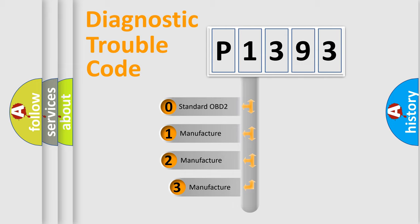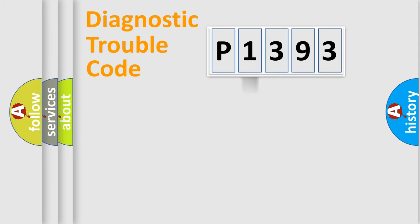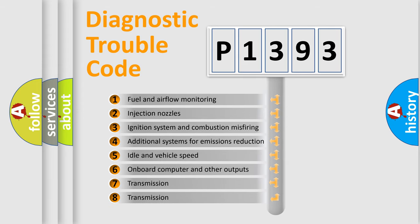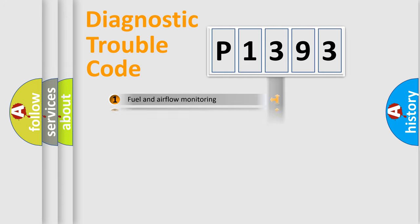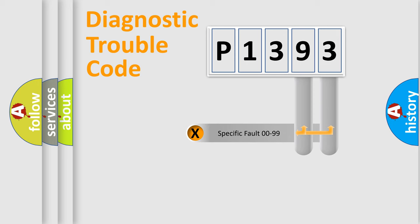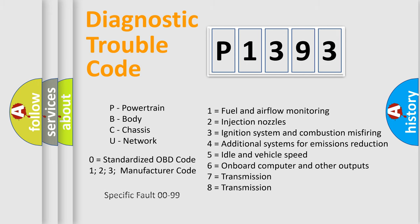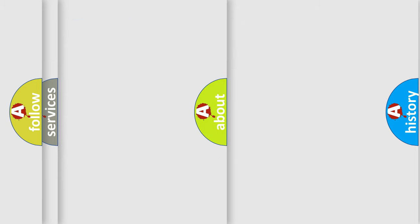If the second character is expressed as zero, it is a standardized error. In the case of numbers 1, 2, or 3, it is a more specific expression of a car-specific error. The third character specifies a subset of errors. This distribution is valid only for the standardized DTC code. Only the last two characters define the specific fault of the group. Note that such a division is valid only if the second character code is expressed by the number zero.